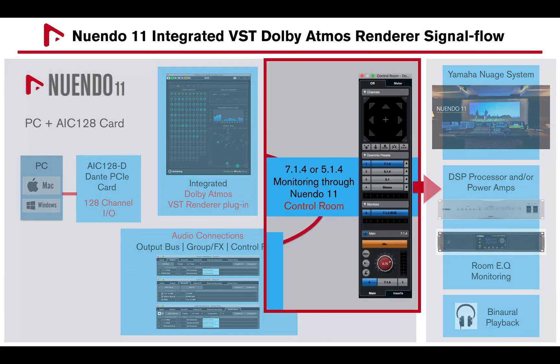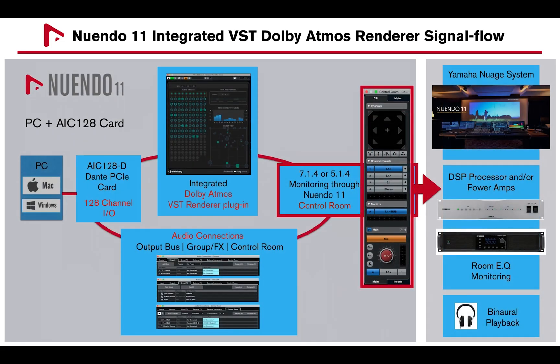Both 7.1.4 and 5.1.4 configurations, which add height to the traditional 7.1 and 5.1 surround formats, can be monitored through Nuendo 11's Control Room, which offers speaker solo options, down-mixing options, as well as control functionalities for the overall signal coming from the integrated VST Dolby Atmos renderer.